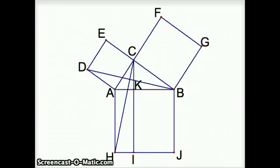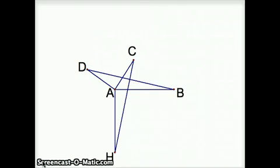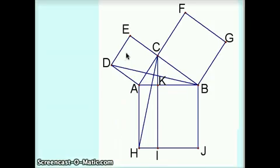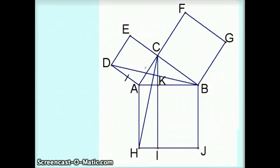To remove some clutter, I can hide parts of the picture and look at how we prove the triangles congruent. The first thing to notice is that DA is part of triangle DAB, and it should be congruent to side AC — because they are part of the same square. DA is part of triangle DAB, and AC is part of triangle CAH.